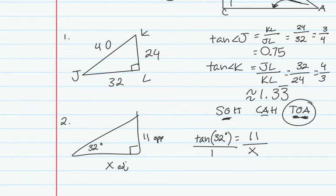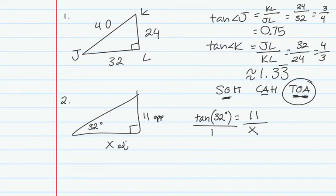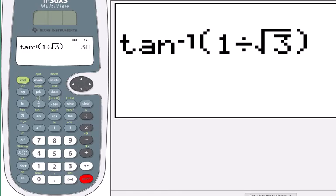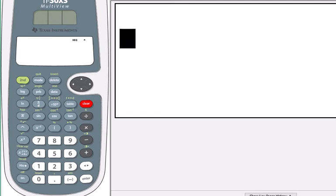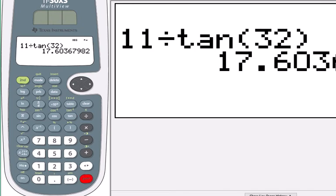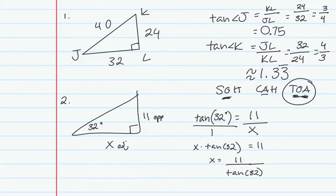I put tangent over 1 and cross multiply, giving me X times the tangent of 32 equals 11. To solve for X, I divide each side by the tangent of 32. Be careful when using your calculator — make sure you're entering it correctly. So 11 divided by tangent of 32, and I get about 17.6.